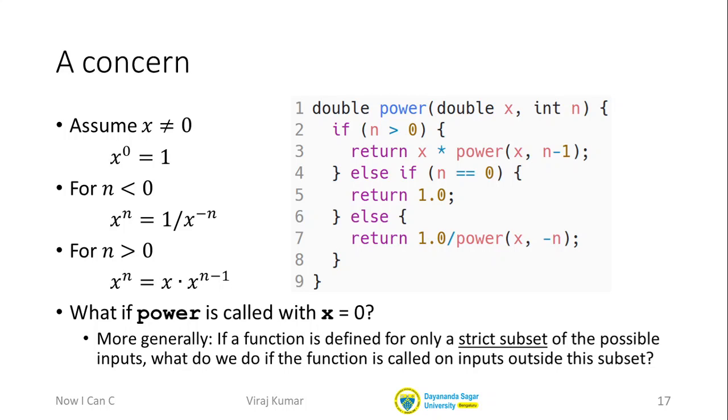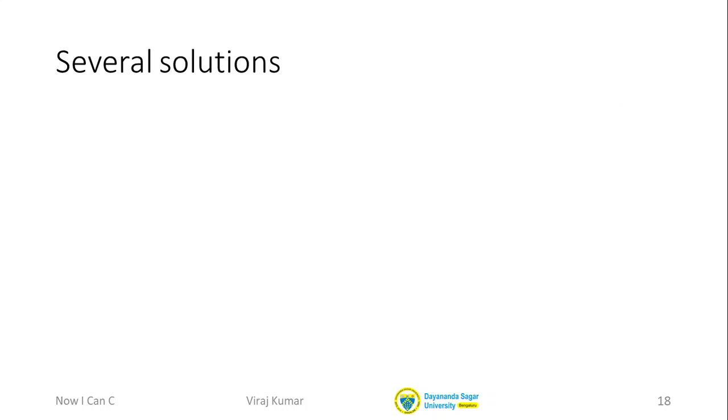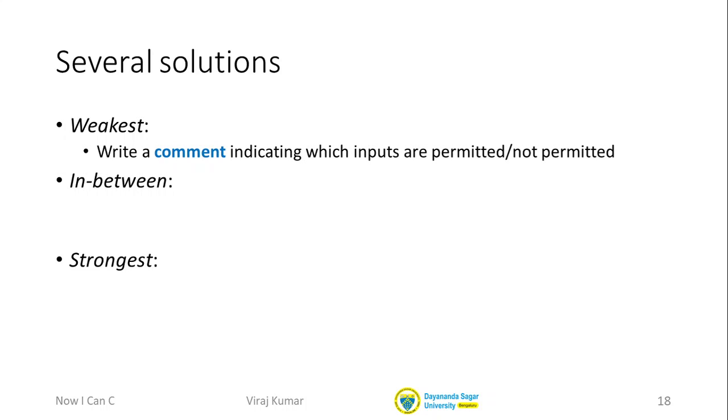It turns out we can do several things and we will just take a look at three possible solutions. So the simplest solution and in some sense the weakest solution is just to put a note next to the function saying, look, please don't call this function with these illegal values.